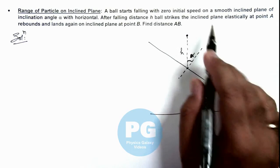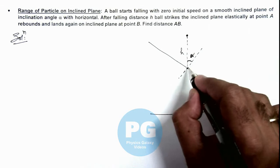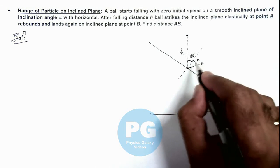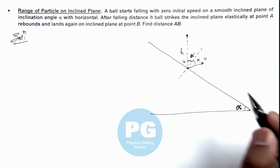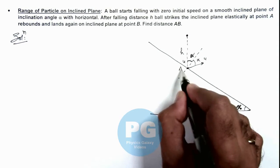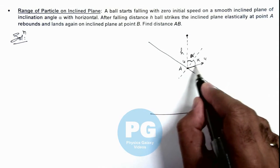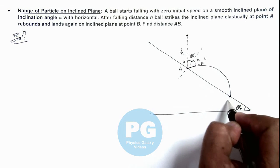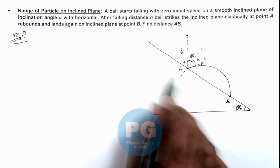If it is given that the ball rebounds elastically, then it'll rebound at the same angle with the same speed u with which it strikes the plane. This point is A. Now it follows the projectile and finally lands again somewhere on the inclined plane at point B, and we are required to find the distance AB.